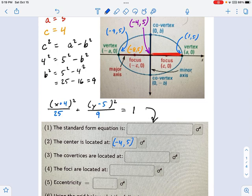The co-vertices are located at, well, if you go up a distance of how much? b squared is 9, so if b squared is 9, that means b is 3. We need to go up 3 and down 3 from the center. That means this is going to be negative 4 comma 2 and negative 4 comma 8 if I'm going down and up by 3.